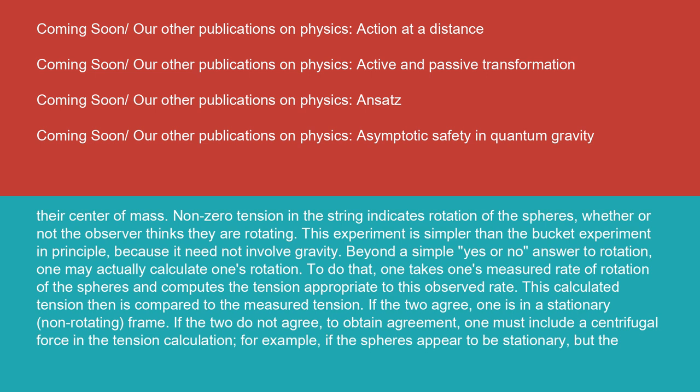This experiment is simpler than the bucket experiment in principle because it need not involve gravity. Beyond a simple yes or no answer to rotation, one may actually calculate one's rotation. To do that, one takes one's measured rate of rotation of the spheres and computes the tension appropriate to this observed rate. This calculated tension then is compared to the measured tension.